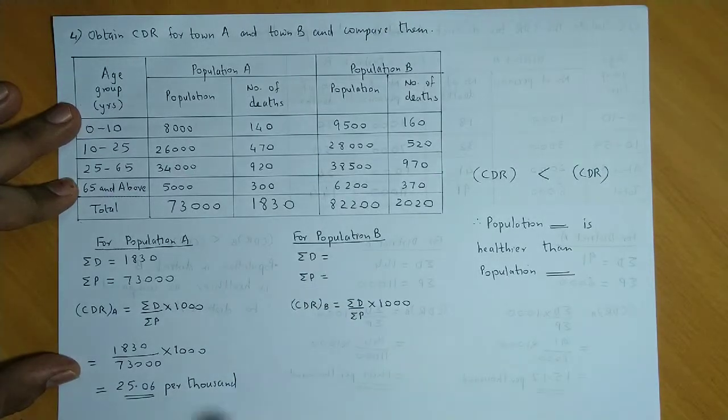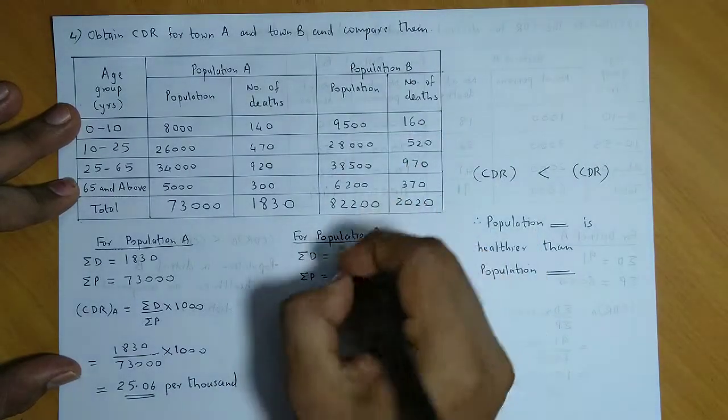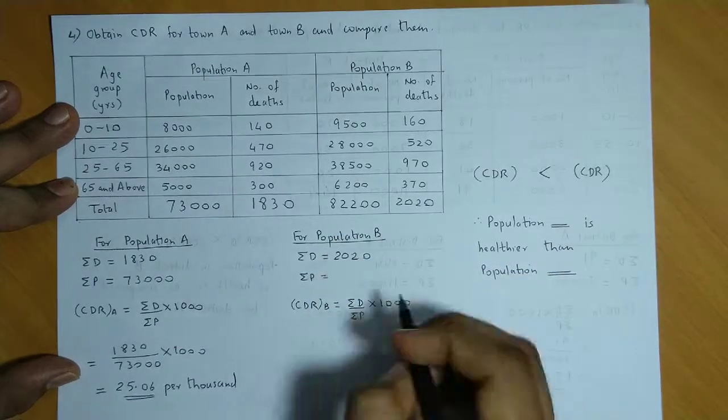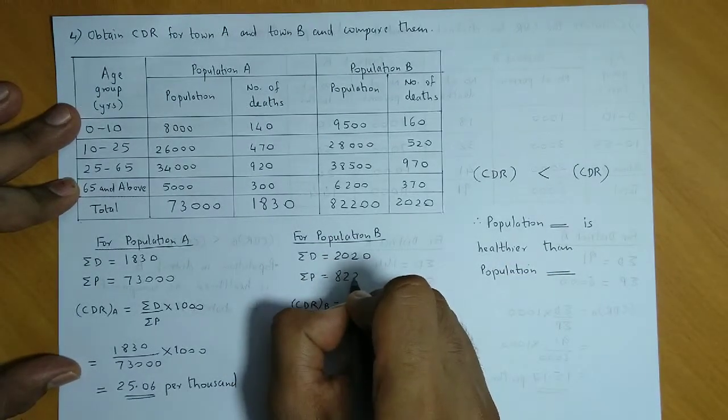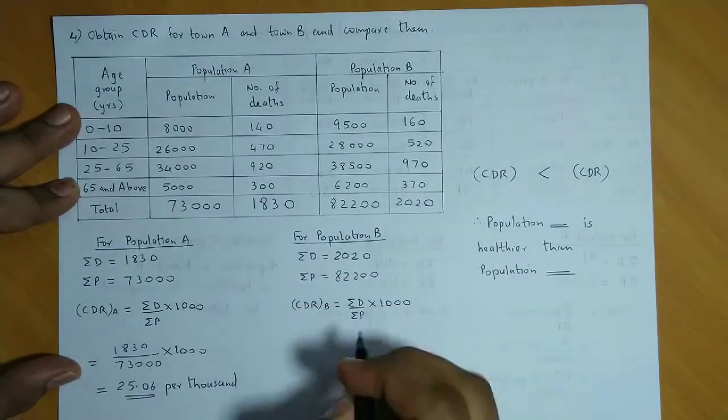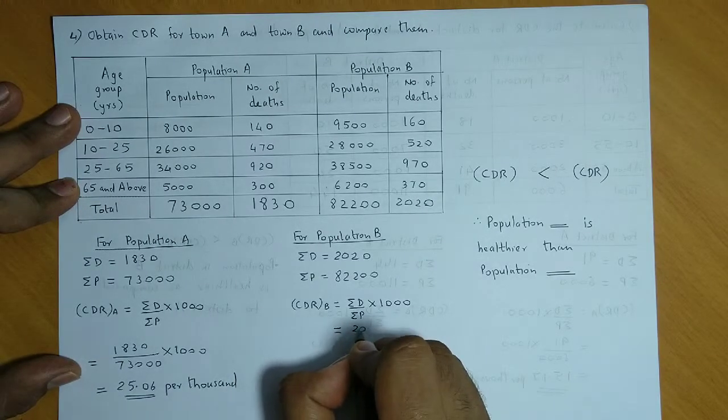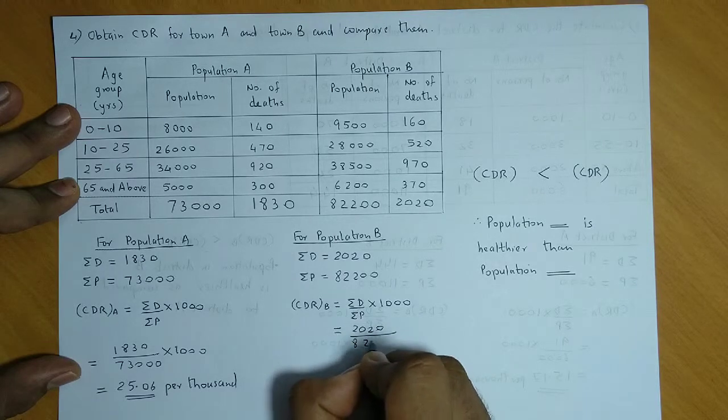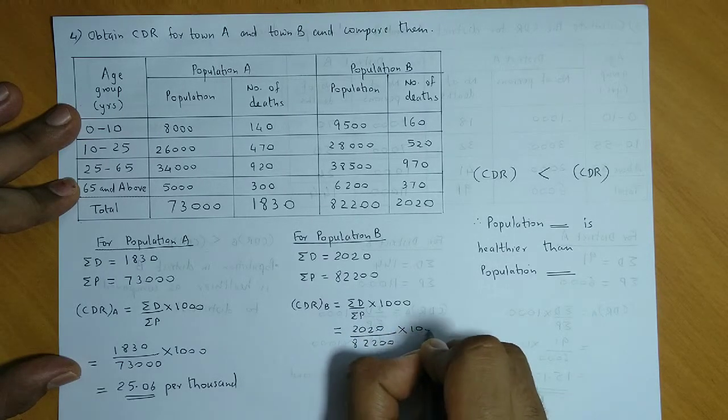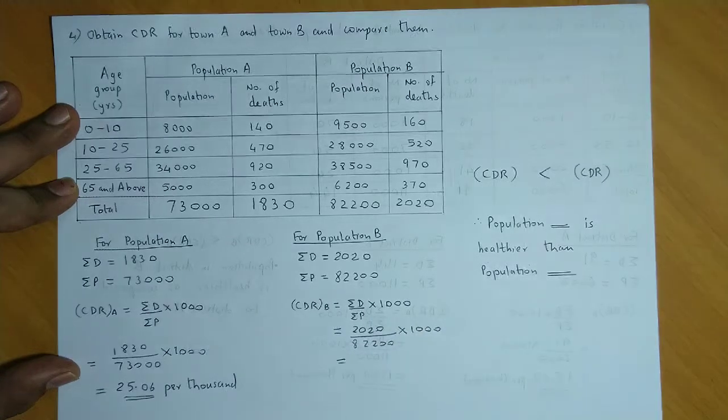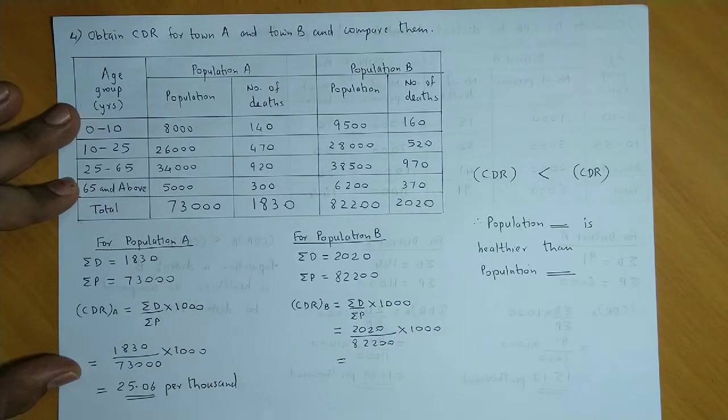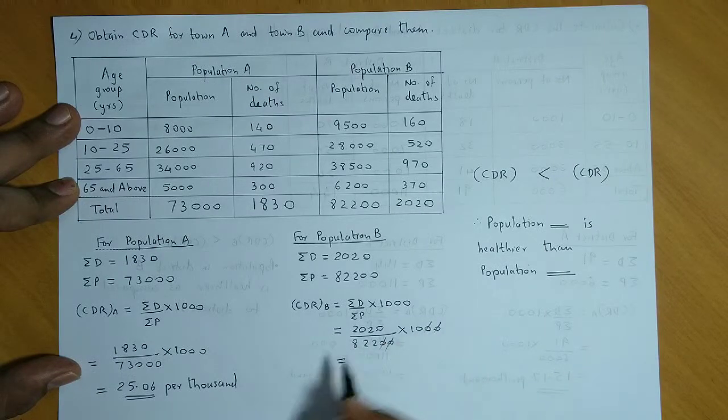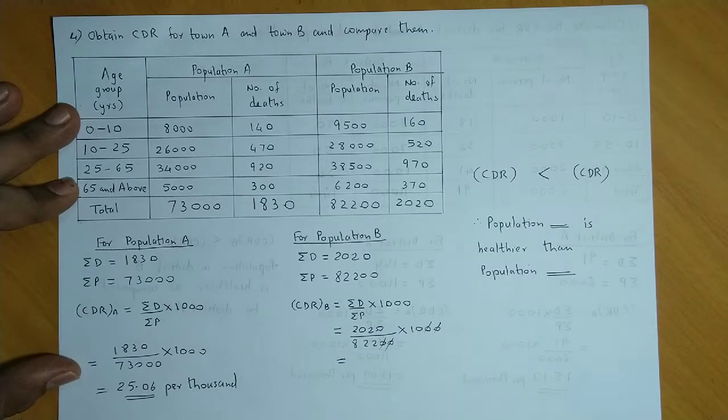Now let's write for B. Total deaths in B is 2,020. Total population is 82,200. If we substitute in the CDR formula, we get 2,020 divided by 82,200 into 1,000. If we simplify, we can cut two zeros here, so 20,200 divided by 822.